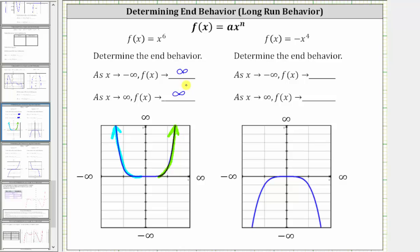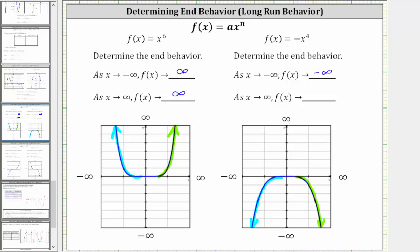Now let's look at f(x) = -x⁴. As x approaches negative infinity, or as we move to the left along the graph, the graph goes down, and therefore the function values approach negative infinity. As x approaches positive infinity, or as we move to the right along the graph, the graph goes down, and therefore f(x) approaches negative infinity.